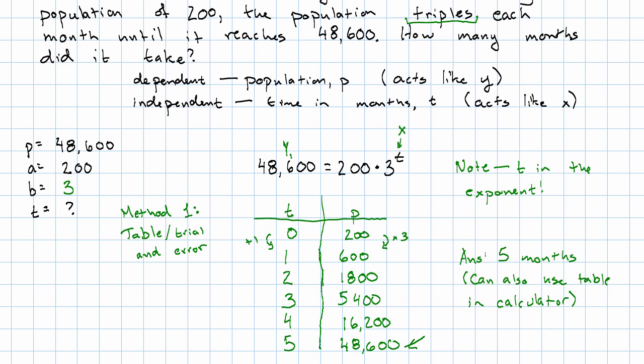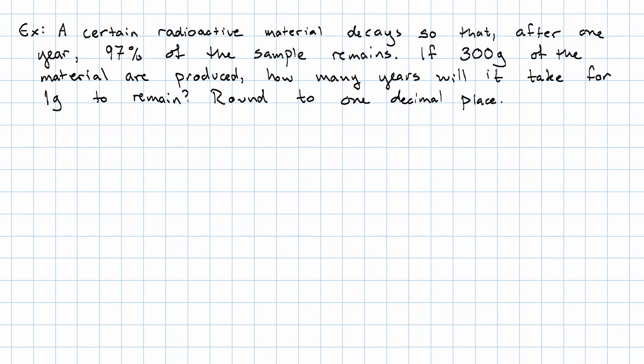What if our answer is really big or what if our answer is a fraction? Suppose we have a radioactive material that decays so that after one year, 97% of the sample remains. It's a fact about physics that radioactive materials do decay exponentially. If 300 grams of the material are produced, how many years will it take for one gram to remain?